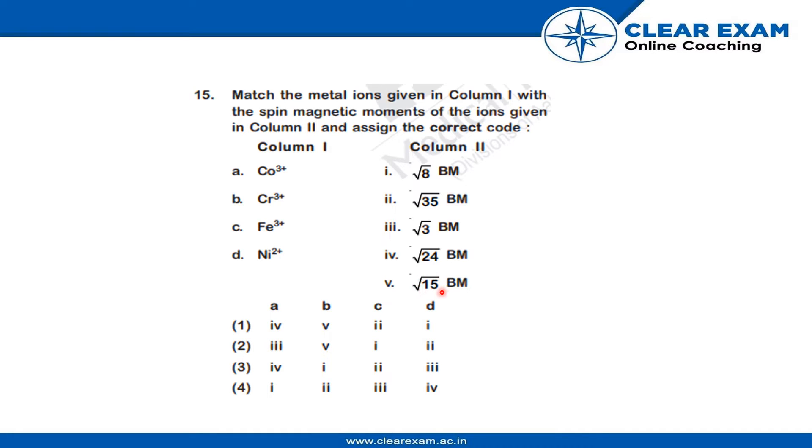An extra option has been given and the different matches have already been provided. The order of the columns is A, B, C, D. The options are: (1) iv, v, ii, i; (2) iii, v, i, ii; (3) iv, i, ii, iii; (4) i, ii, iii, iv.